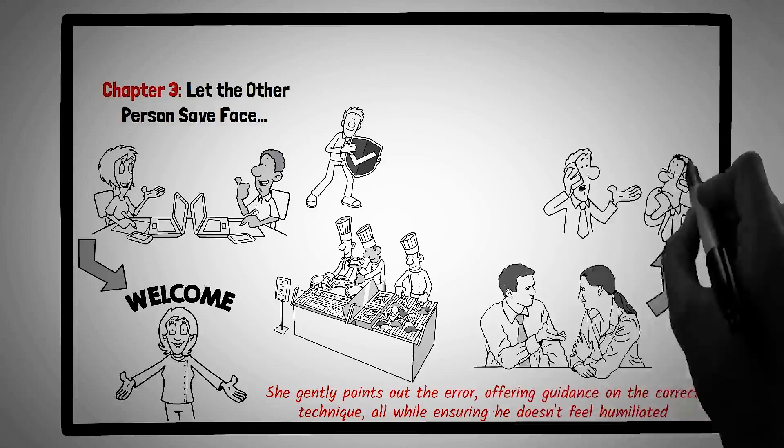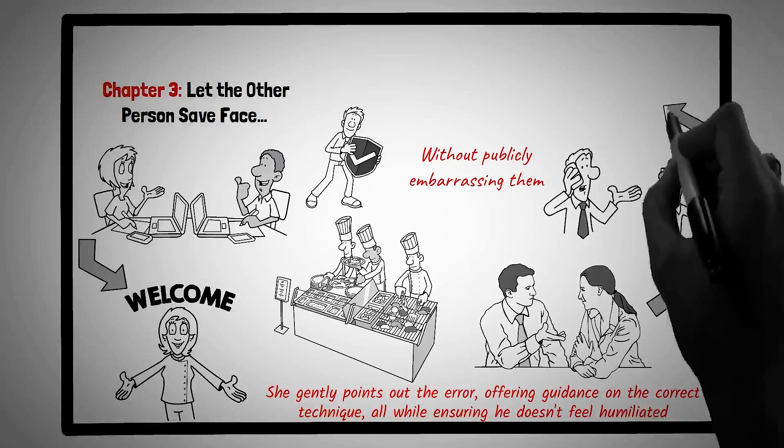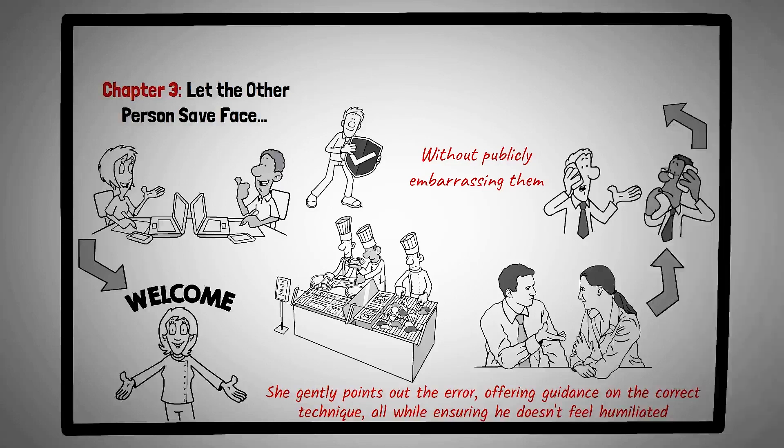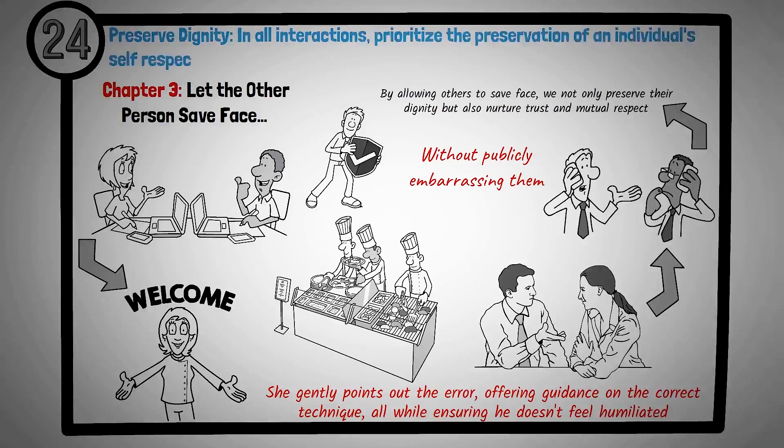When faced with situations where someone makes an error or oversight, consider how you can address the issue without publicly embarrassing them. Whether it's a co-worker's mistake, a friend's oversight, or a family member's misjudgment, allowing them to save face can lead to more constructive outcomes and preserve the integrity of the relationship. Respect and empathy are cornerstones of positive interactions. By allowing others to save face, we not only preserve their dignity, but also nurture trust and mutual respect. Principle number twenty-four is preserve dignity. In all interactions, prioritize the preservation of an individual's self-respect and dignity, even when addressing mistakes.